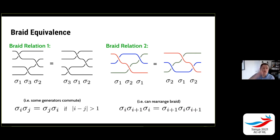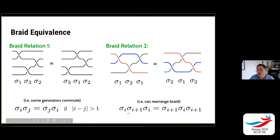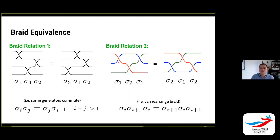There's also braid equivalence. If I have sigma one acting, then sigma three, then sigma two, this is topologically equivalent to sigma three acting, then sigma one, then sigma two. In other words, sigma one and sigma three commute. More generally, generators commute whenever the absolute value of their difference is greater than one. Then there's a second braid relation: sigma i, sigma i+1, sigma i equals sigma i+1, sigma i, sigma i+1.